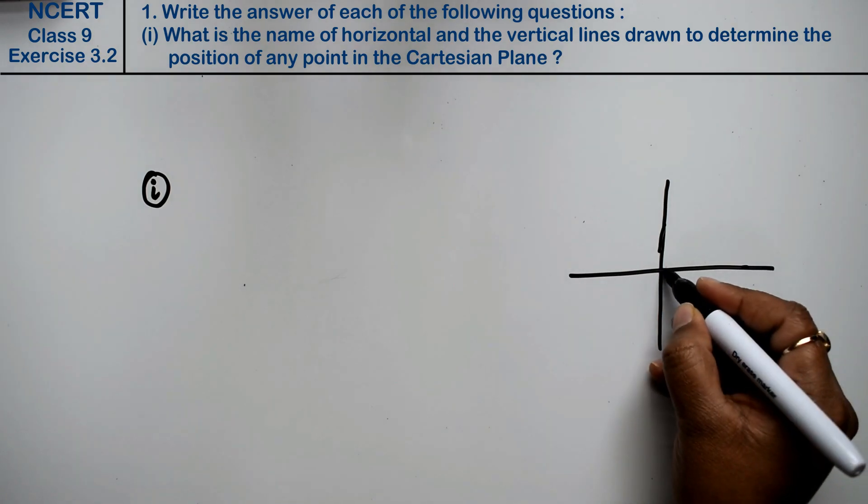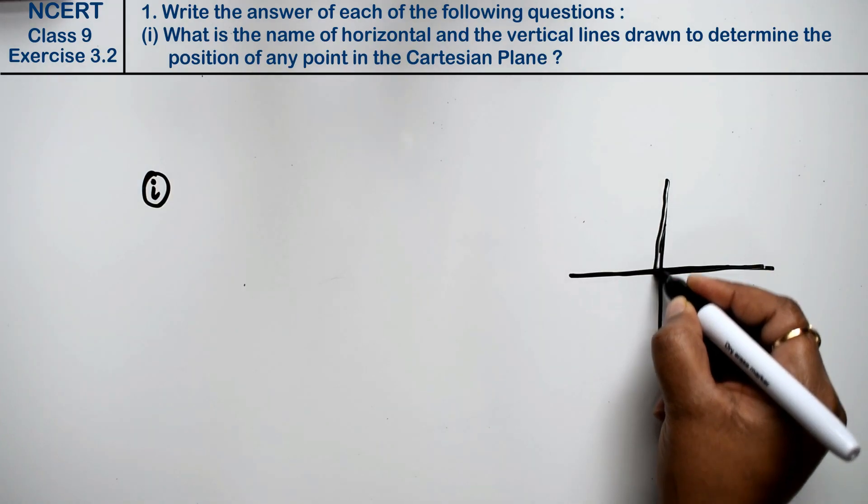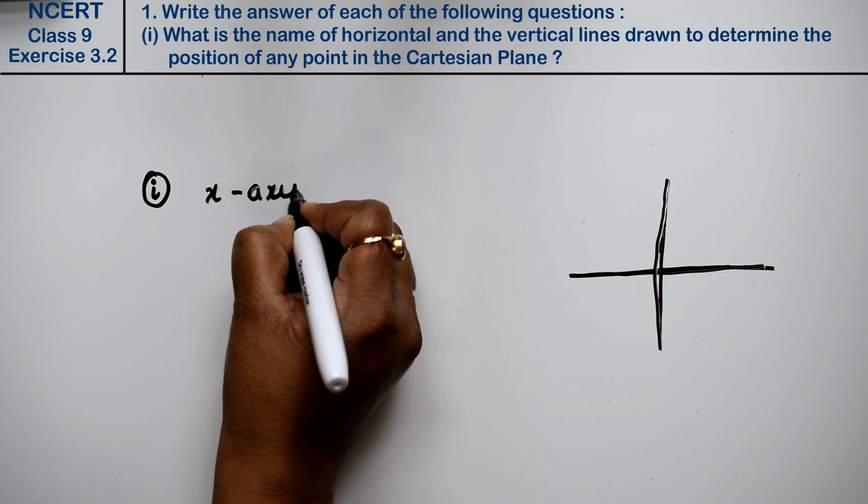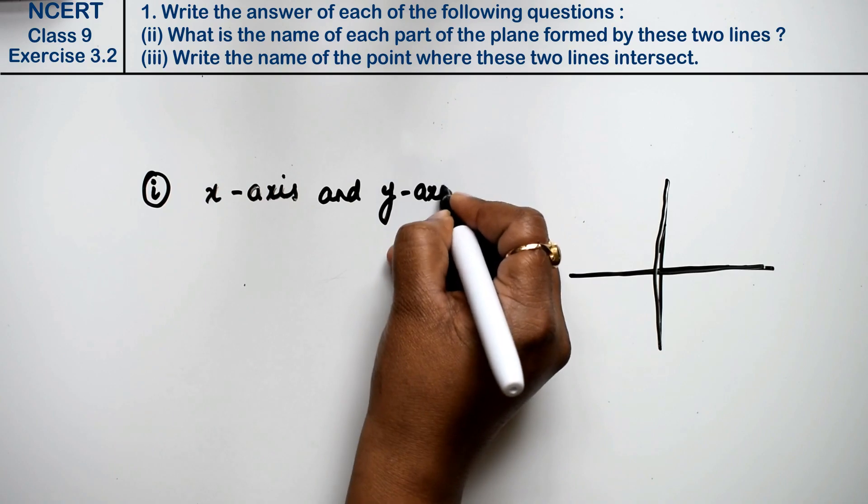We know that these lines are called x-axis and y-axis. So x-axis and y-axis, right? Write.